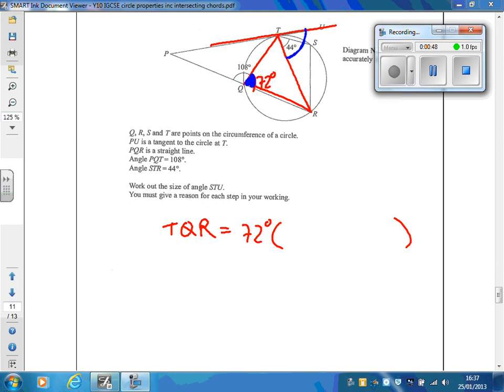The angle in the alternate segment, in other words this one over here, is also 72 degrees. So I'm going to write that angle RTU must also be 72 degrees, and the reason for that is it's the angle in the alternate segment. You can just write 'alternate segment,' that would do.